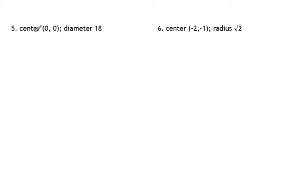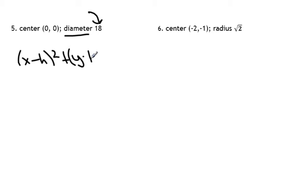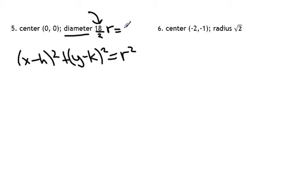Number five. This time we're going to write the standard equation of a circle, but we have the diameter given to us. The standard equation of a circle is x minus h squared plus y minus k squared equals our radius squared, not our diameter squared. So we just need to calculate our radius in this problem. The radius is always half of the diameter, so the radius in this case would be nine.